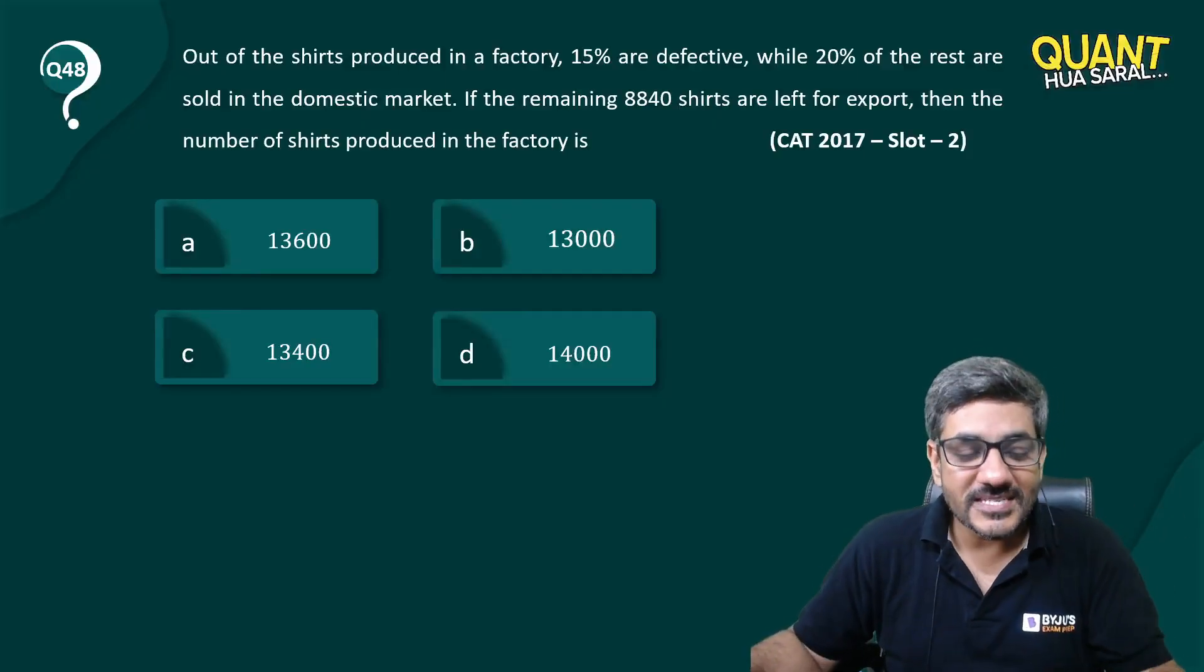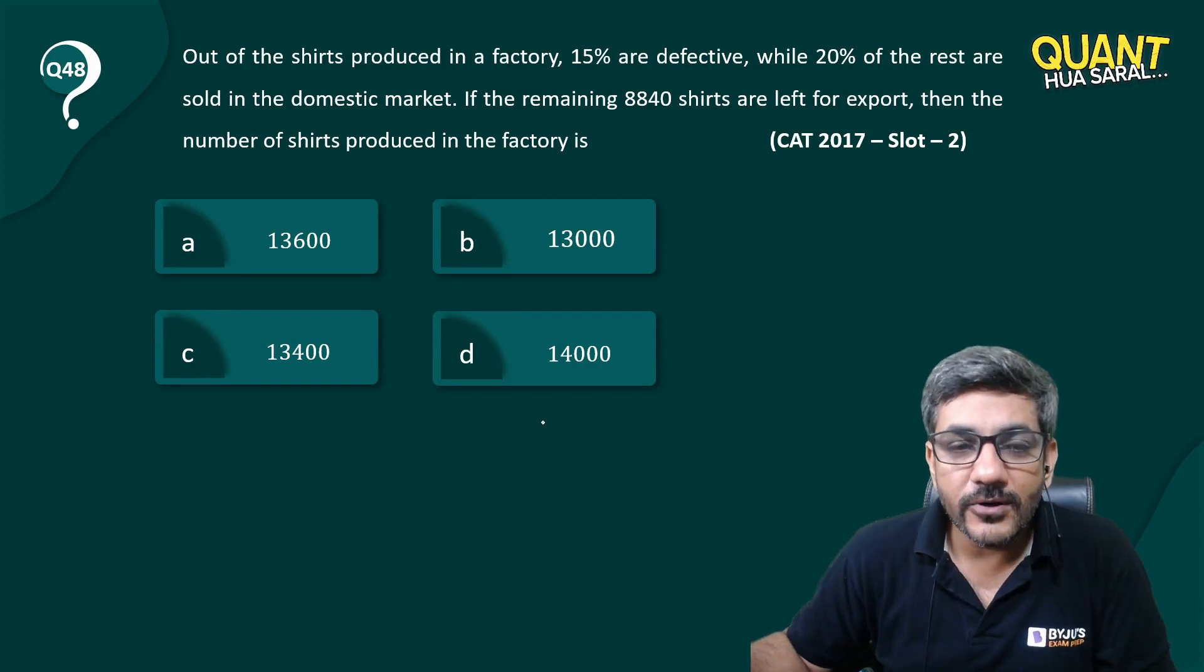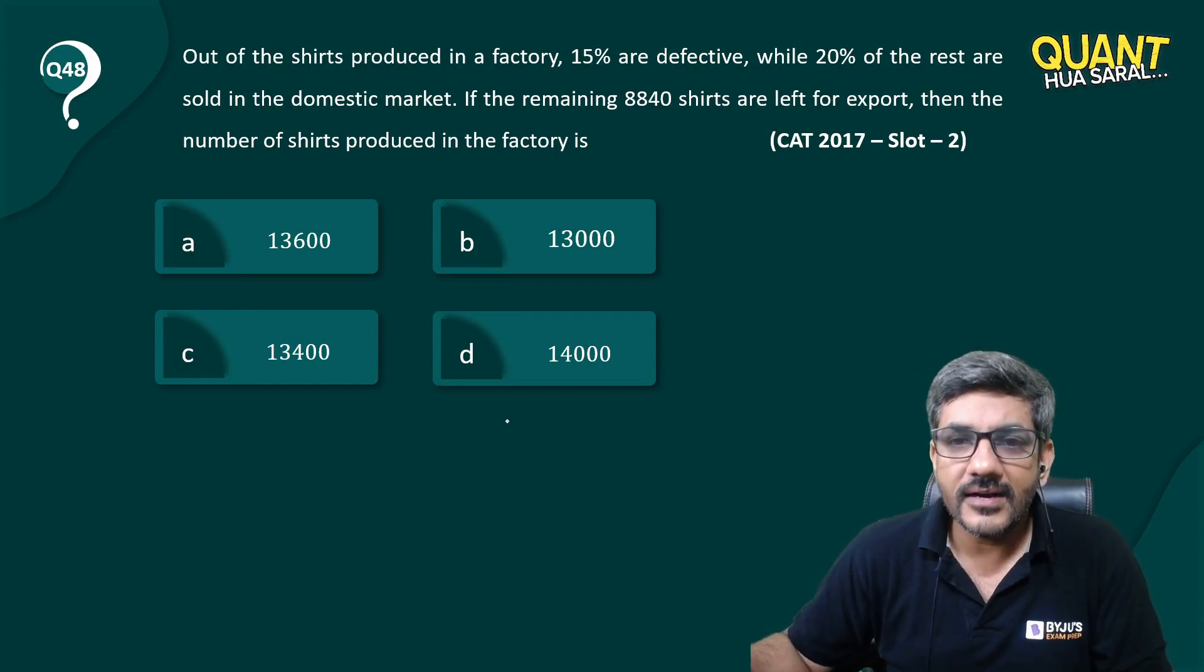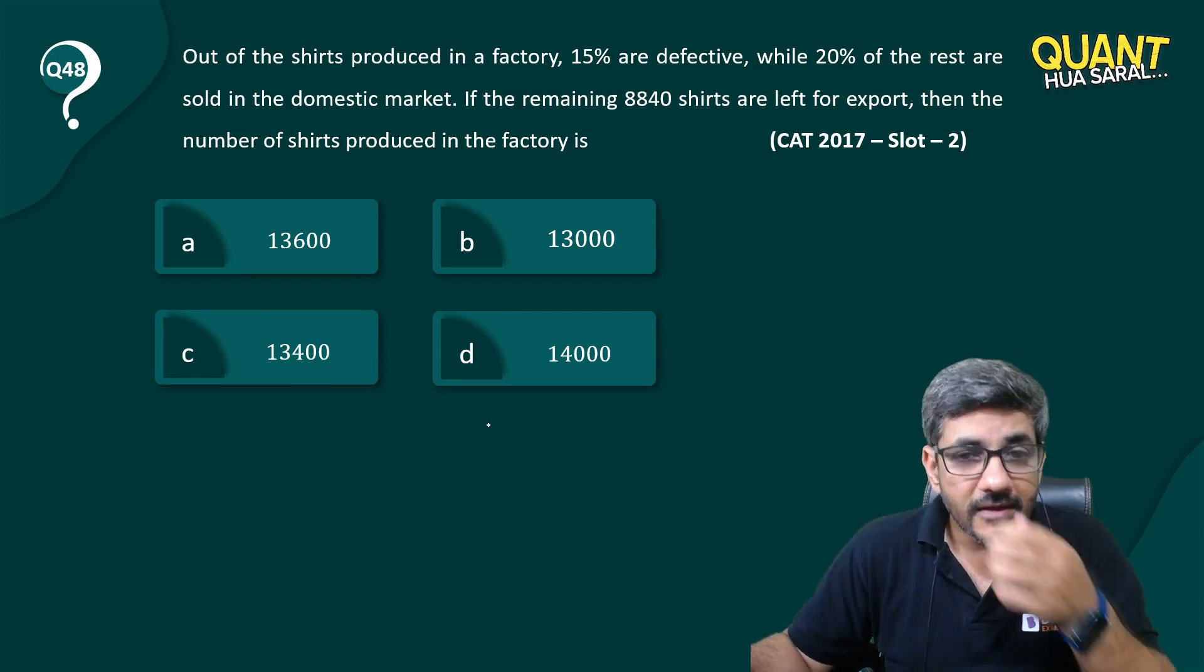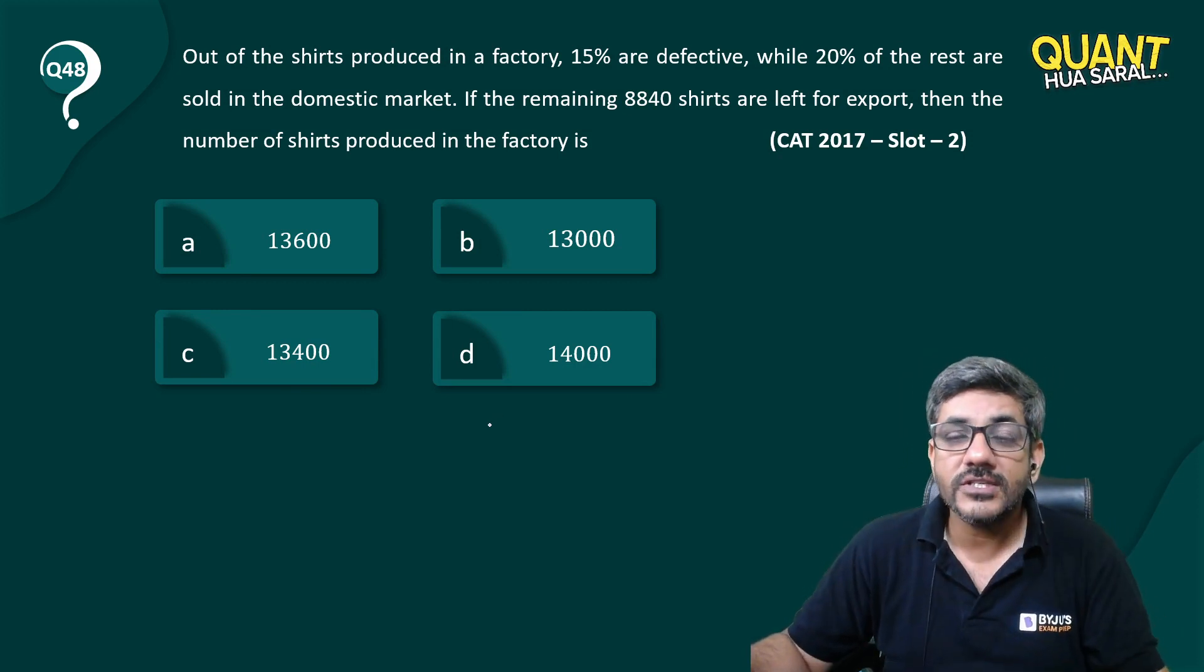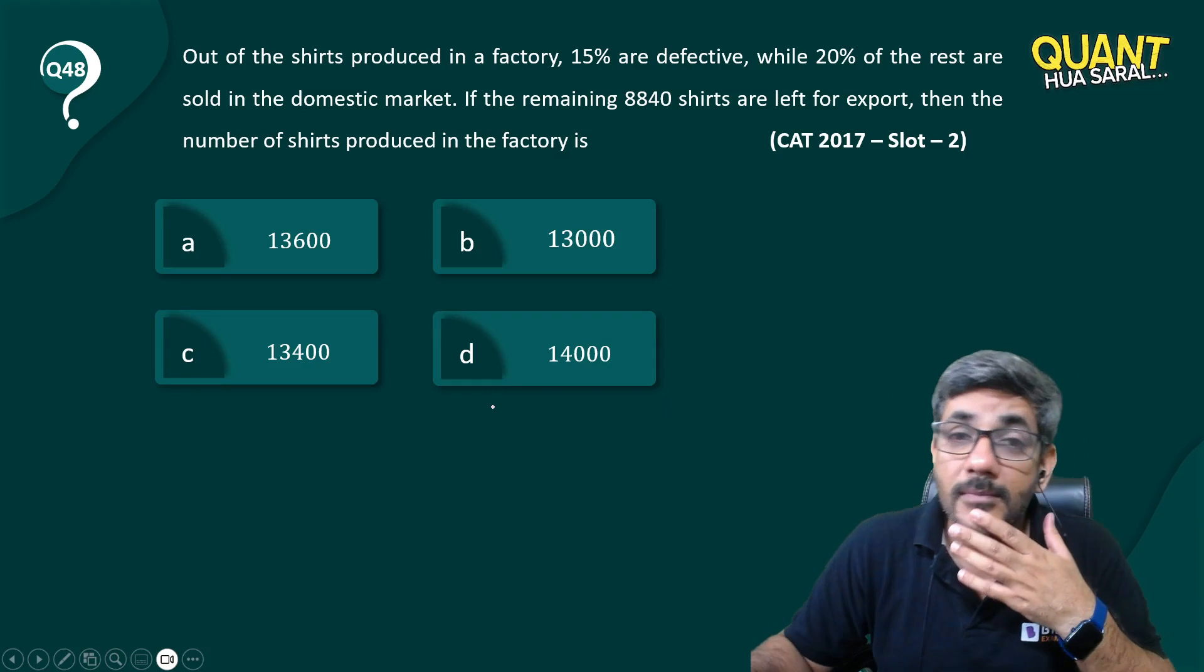Hello, welcome back to question number 48 of this series. Out of the total shirts produced in a factory, 15% are defective while 20% of the rest are sold in the domestic market. If the remaining 8840 shirts are left for export, then the number of shirts produced in the factory is.